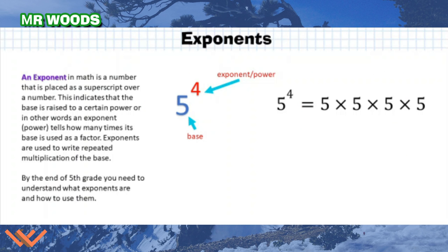An exponent in math is a number placed as a superscript over a base number, indicating the base is raised to a certain power. The exponent tells how many times the base is used as a factor — exponents are used to write repeated multiplication. Here we see the number 5 as the base raised to the power of 4. So 5 to the 4th is 5 times 5 times 5 times 5, which equals 625.